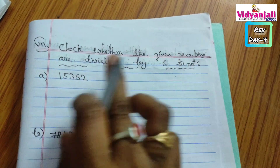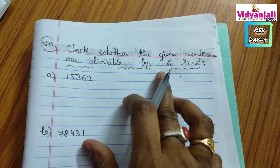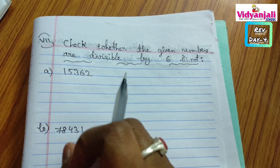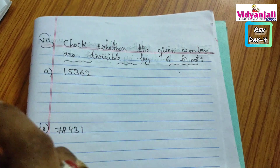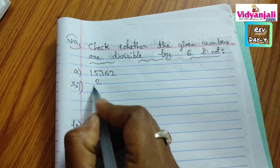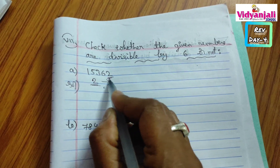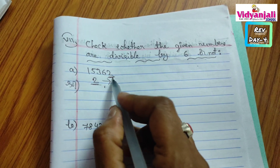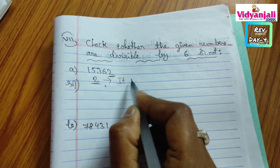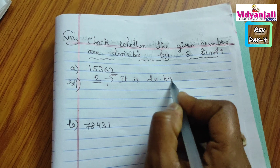7th Roman: check whether the given numbers are divisible by 6 or not. What is the divisibility rule for 6? We have to check both 2 divisibility and 3 divisibility. If both are satisfied, we say the number is divisible by 6. Let's check 2 divisibility first. If a number ends with 0, 2, 4, 6, or 8, yes, it is divisible by 2.